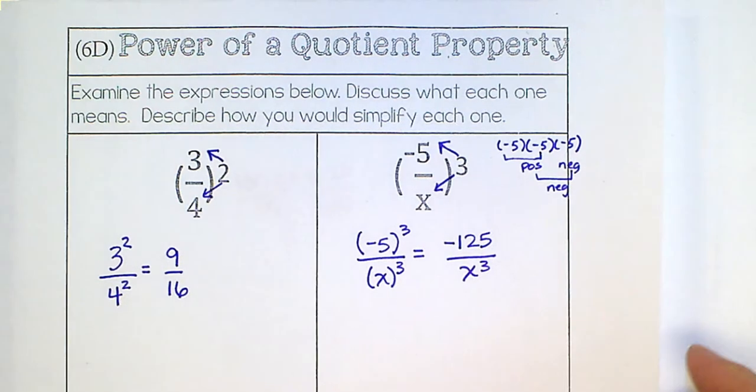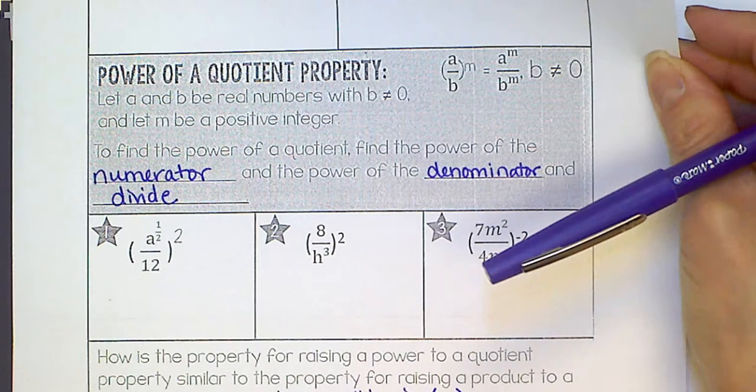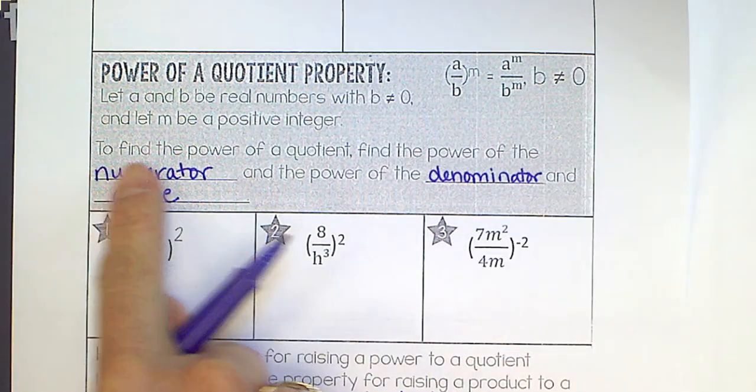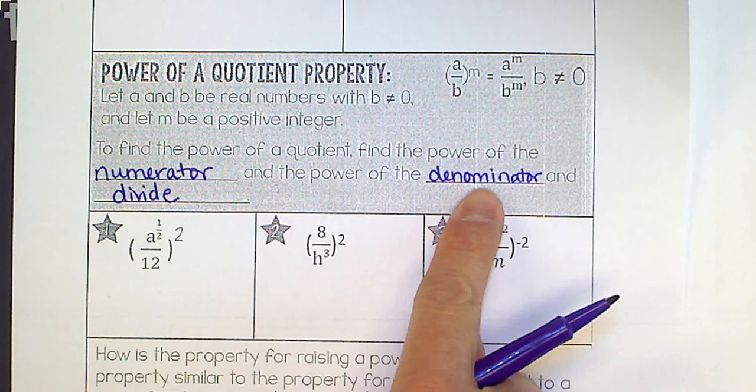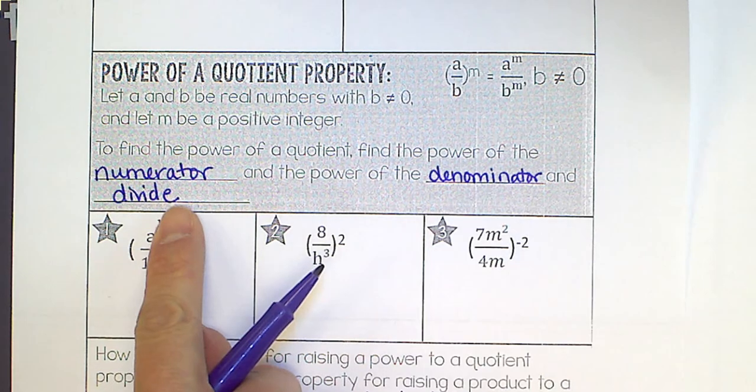So what we are discovering, the power of a quotient. To find the power of a quotient, find the power of the numerator and the denominator, and then divide if you can, and you will have to follow the dividing rules.